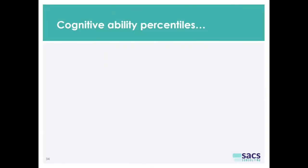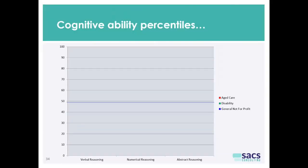Firstly, we want to talk about cognitive ability, and there's some data here which is once more based on thousands of people. We have data on three sectors: aged care, disability, and the general not-for-profit sector. Aged care and disability I think are straightforward enough.